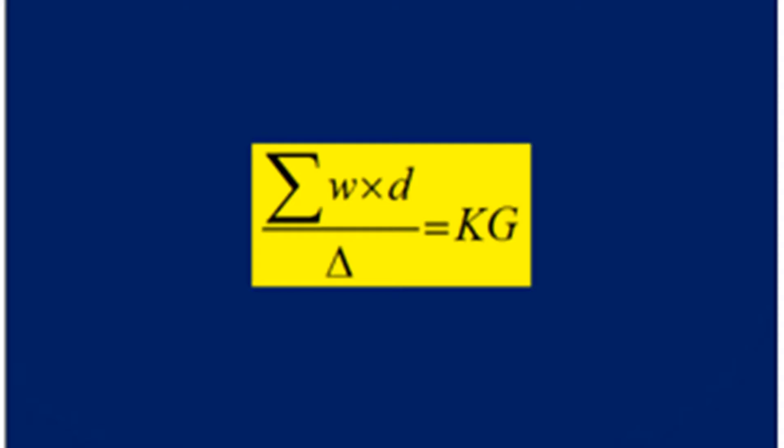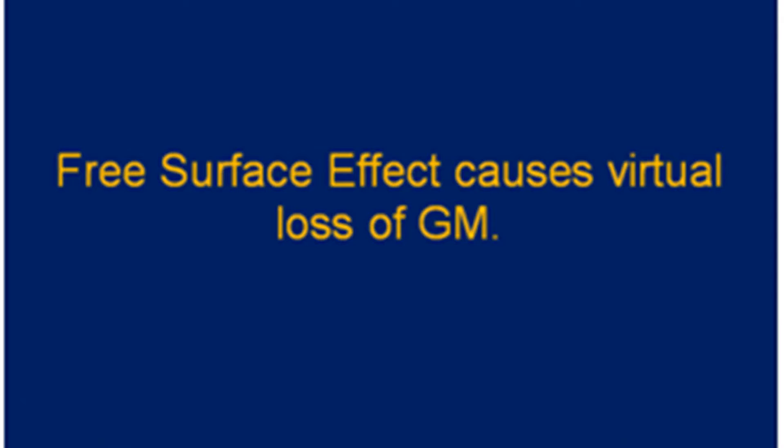This KG is KG solid. With this displacement, when we enter the hydrostatic tables we can find the KM, and KM minus KG gives the GM of the vessel. This is called metacentric height, but it is GM solid.